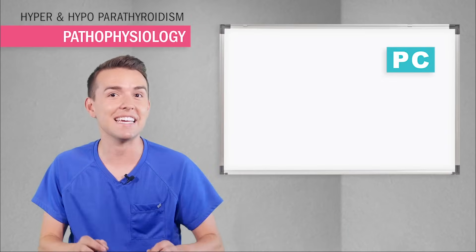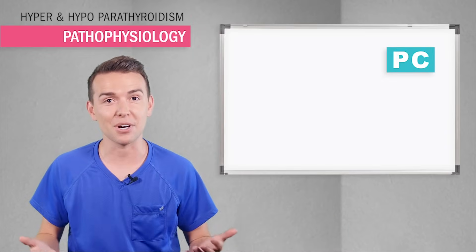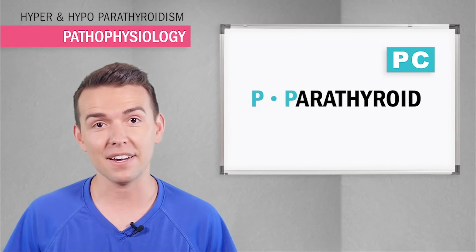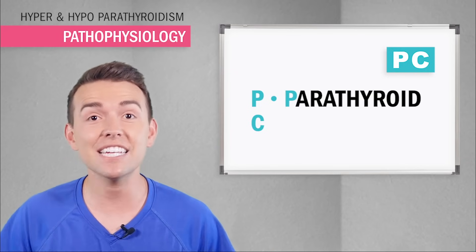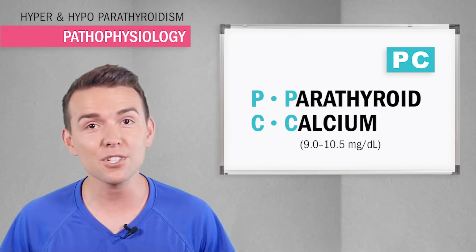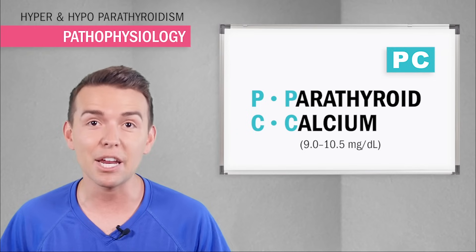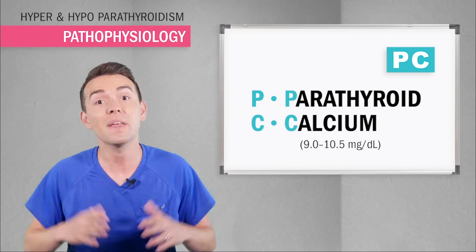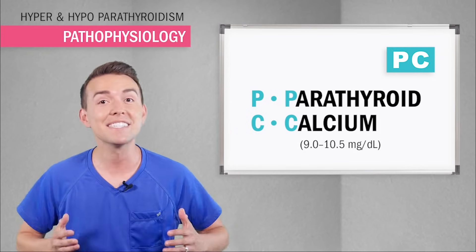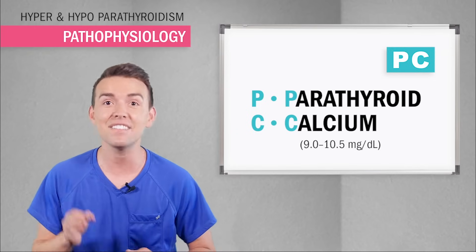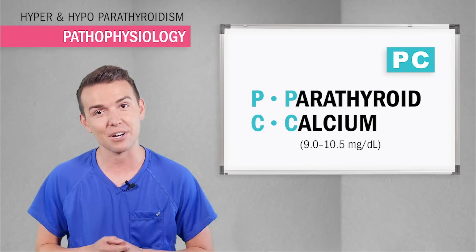The parathyroid glands are almost exclusively responsible for the regulation of blood calcium. So think PC, like a computer — P is for parathyroid and C is for calcium. The levels are typically 9.0 to 10.5; however, some books will say 8.5 to 10.0, so be sure to know what your textbook says.